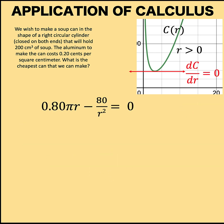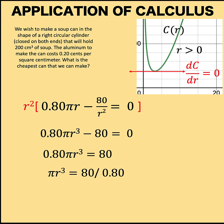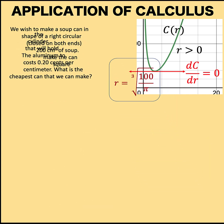So, solving for r, let's multiply both sides of the equation by r² so we can eliminate the denominator r squared and add 80 to both sides of the equation and divide by 0.80 both sides of the equation to get πr³ equals 100 and then divide both sides by π and take the cube root of both sides to get r equals the cube root of 100/π. This is now the value of r that gives us this minimum value for the cost function.